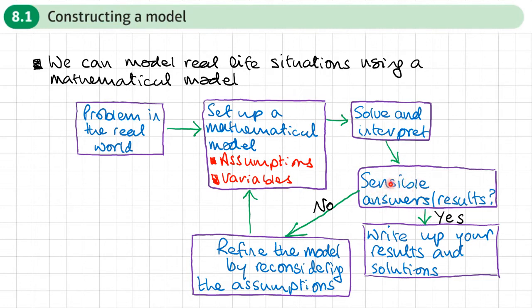I know that's not sensible. If I do get sensible results, then I can just write out my results and solutions and end there. But normally, in the first time round when we've simplified things, we may not get sensible results. So we need to refine the model by reconsidering the assumptions that we made. I may now decide to include air resistance or include the ball's spin, and then we go back and improve our model.